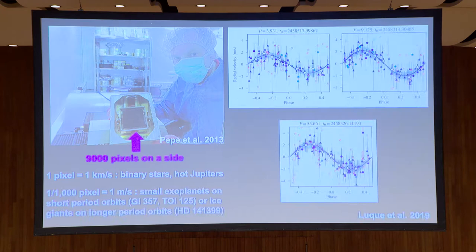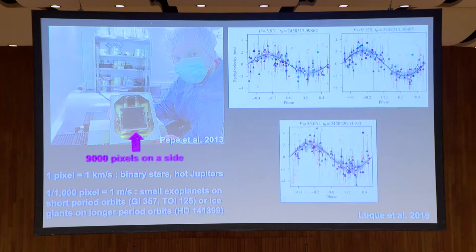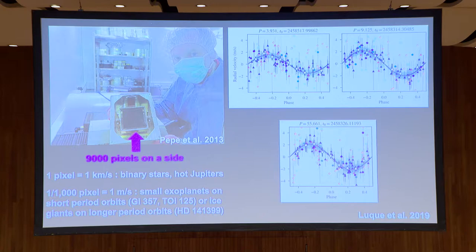We passed the kilometer per second mark quite a while ago. If you can get down to measuring things on the 1/1000th of a pixel scale, which we now do pretty regularly, you can start measuring planets from small Earth up to Neptune-sized things. Here are results from Gliese 357, presented at this conference. We have radial velocities on the two-meter-per-second level — two thousandths of a pixel.